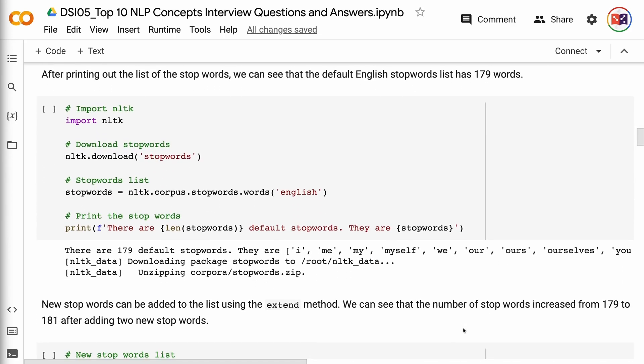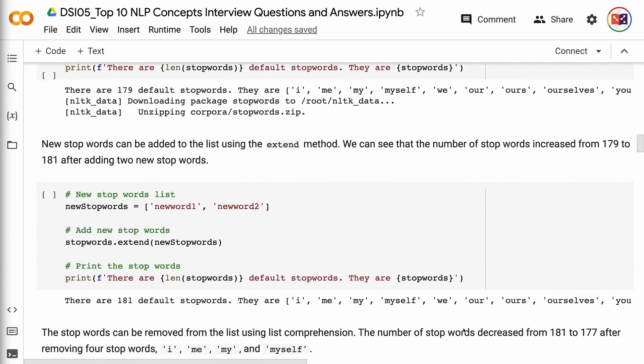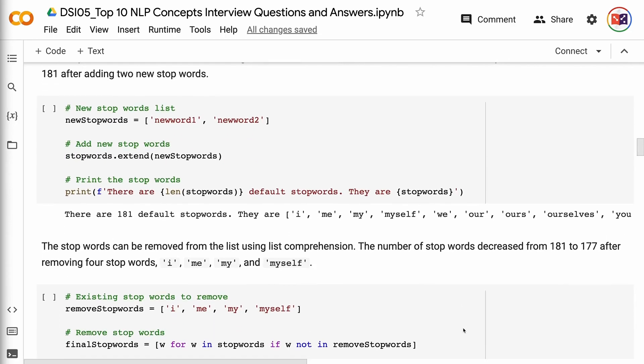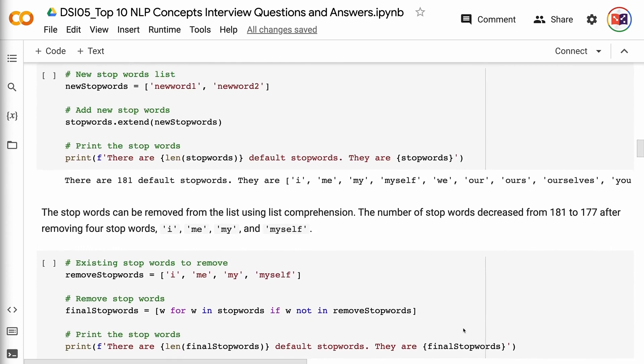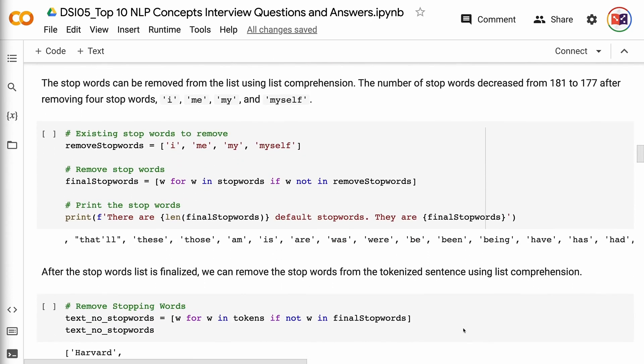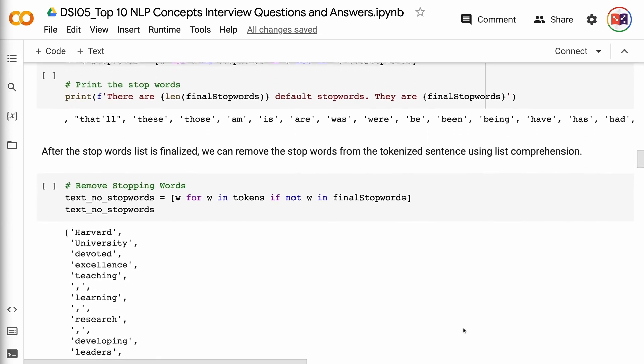New stop words can be added to the list using the extend method. We can see that the number of stop words increased from 179 to 181 after adding two new stop words. The stop words can be removed from the list using list comprehension. The number of stop words decreased from 181 to 177 after removing four stop words: I, me, my, and myself. After the stop words list is finalized, we can remove the stop words from the tokenized sentence using list comprehension.